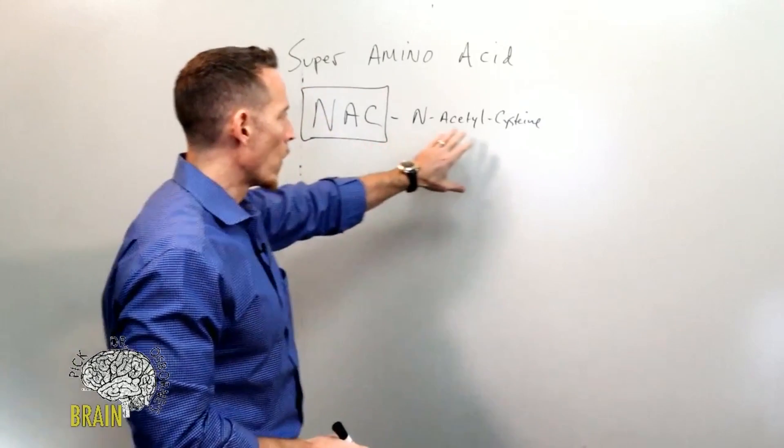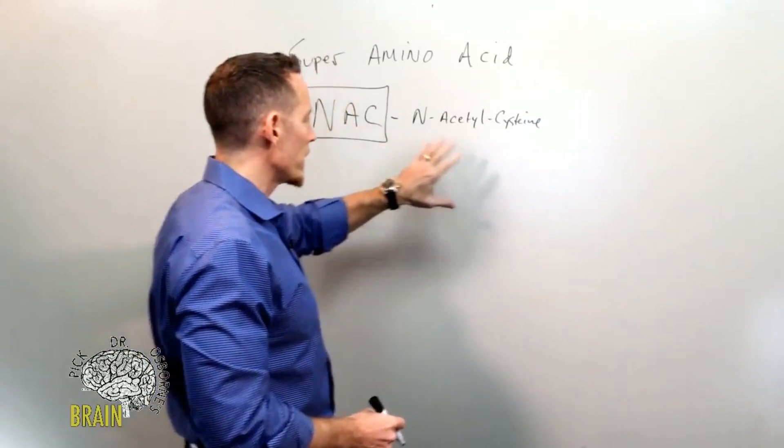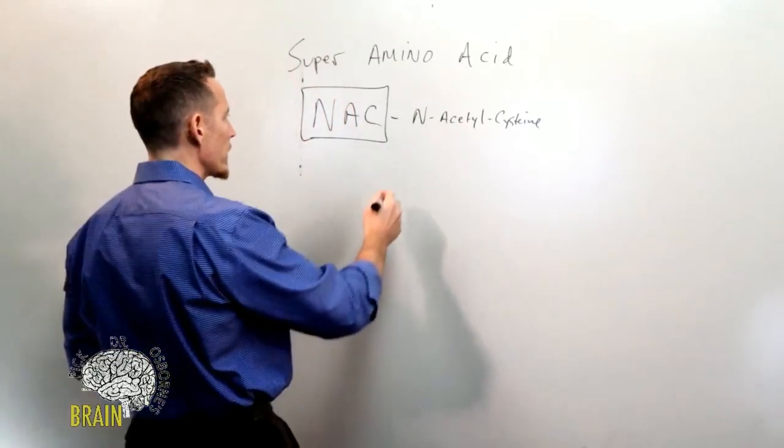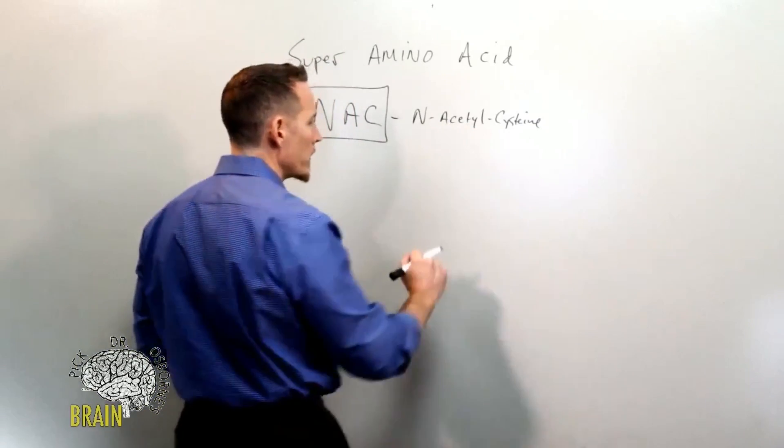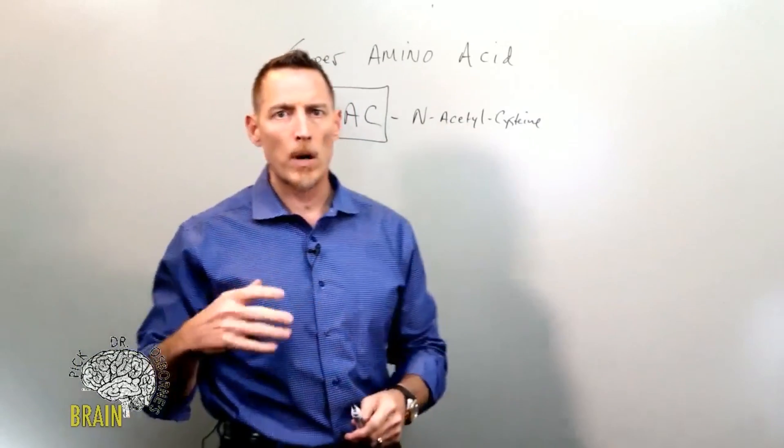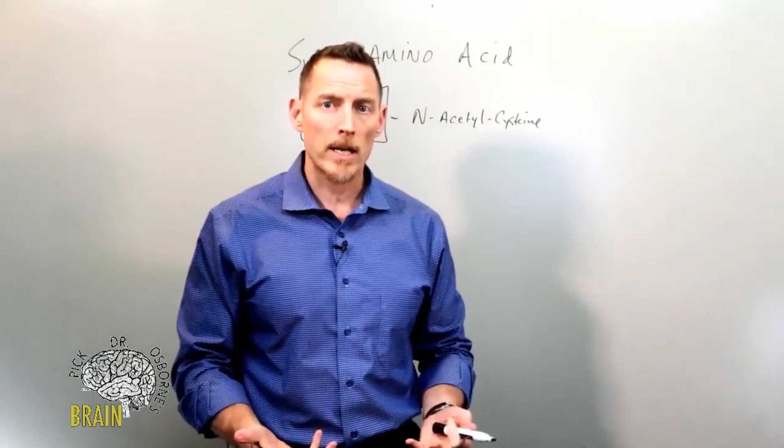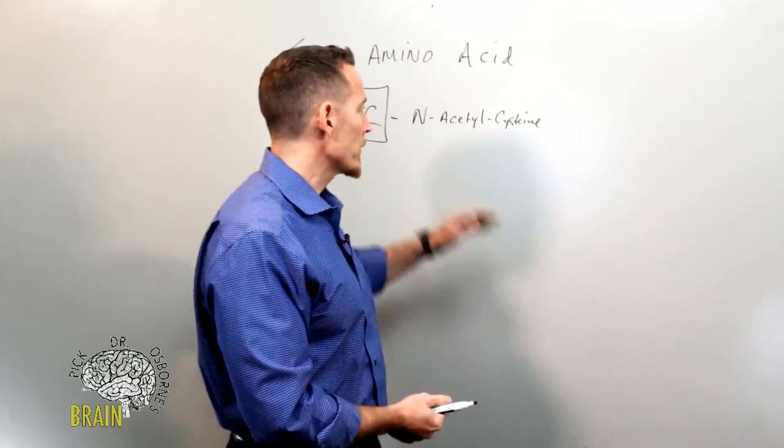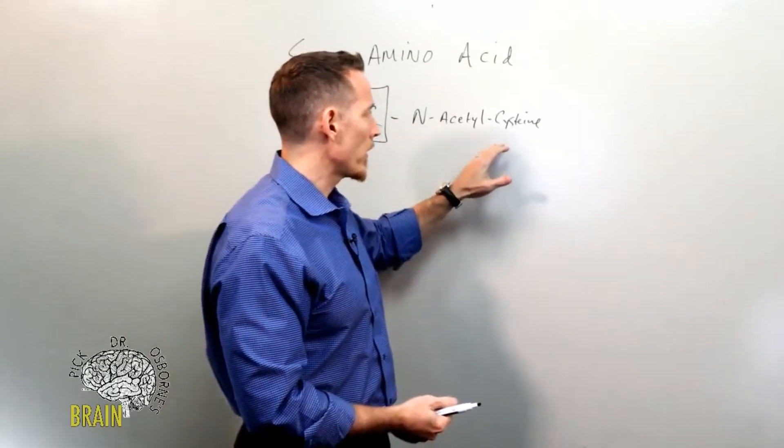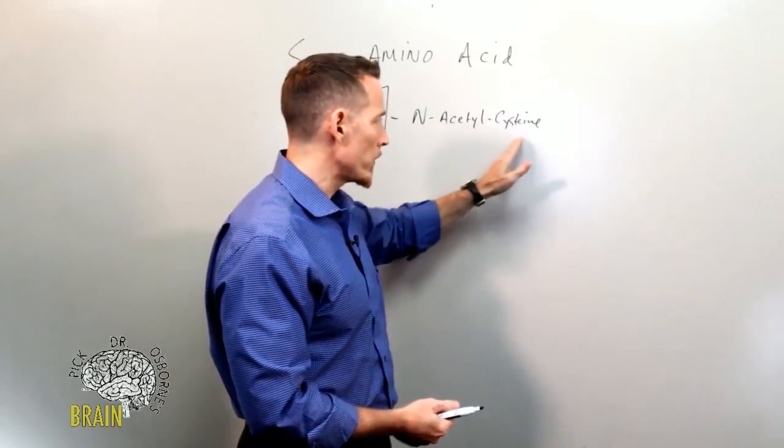Why is this such an important amino acid? Predominantly, this amino acid is critical. It's not an essential amino acid. So when I say essential, I mean there are 10 different essential amino acids, meaning you have to eat them in order to get them. Your body can't produce them. N-acetylcysteine doesn't fall under that category - your body can produce this.